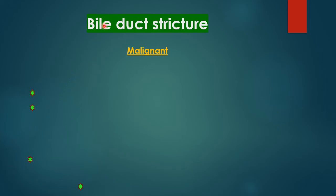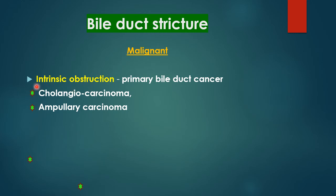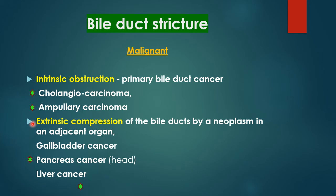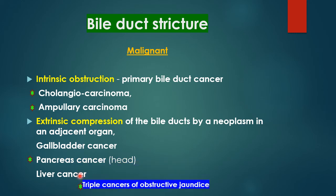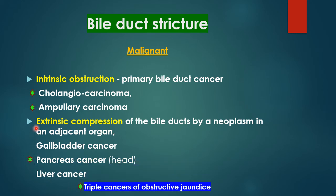Malignant bile duct strictures: intrinsic obstruction due to tumors primarily in the bile ducts — mainly cholangiocarcinoma and ampullary or periampullary carcinoma. Extrinsic compression of the bile ducts can be due to gallbladder cancer, pancreatic cancer (especially head of pancreas), and liver cancer. These three — cholangiocarcinoma, periampullary carcinoma, and pancreatic cancer — are termed the triple cancers of obstructive jaundice, among which pancreatic cancer is the most common.